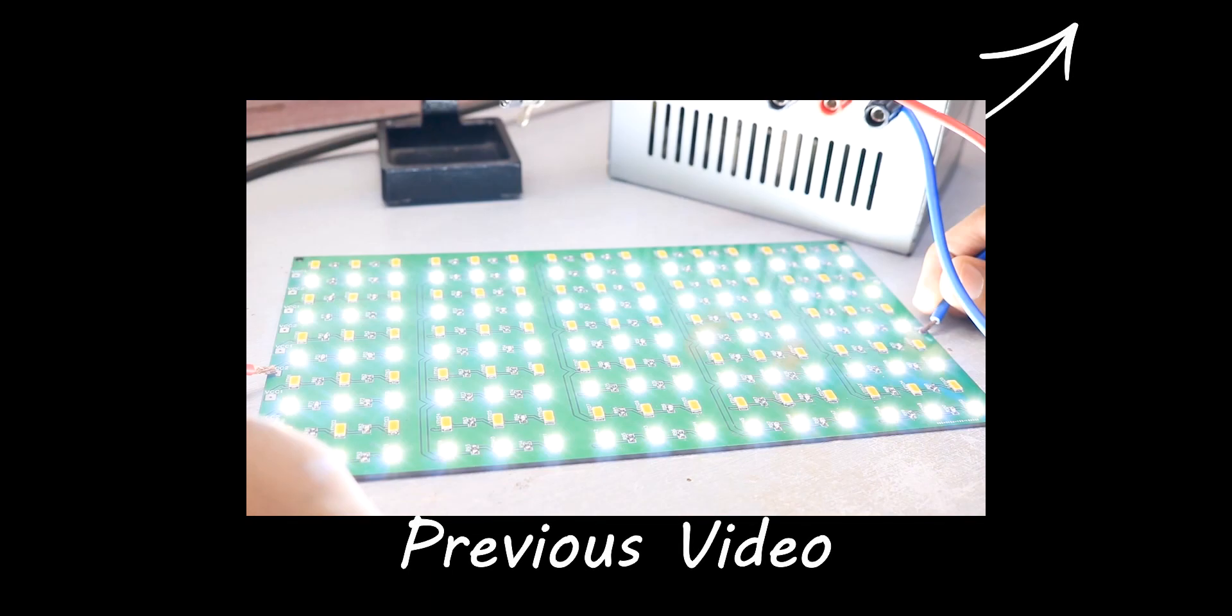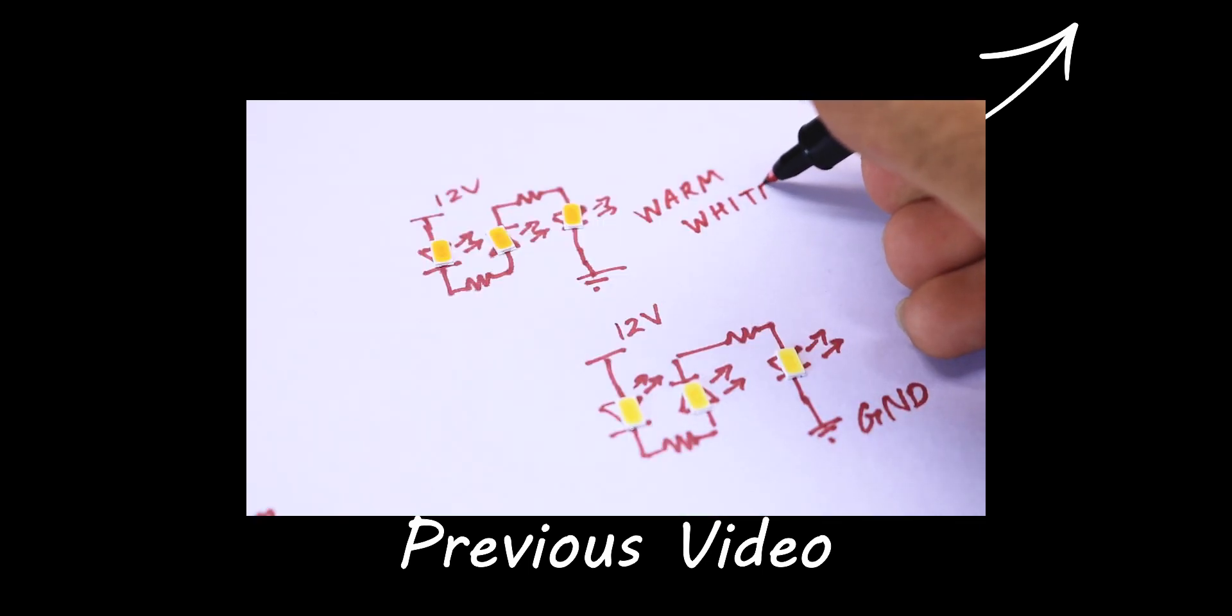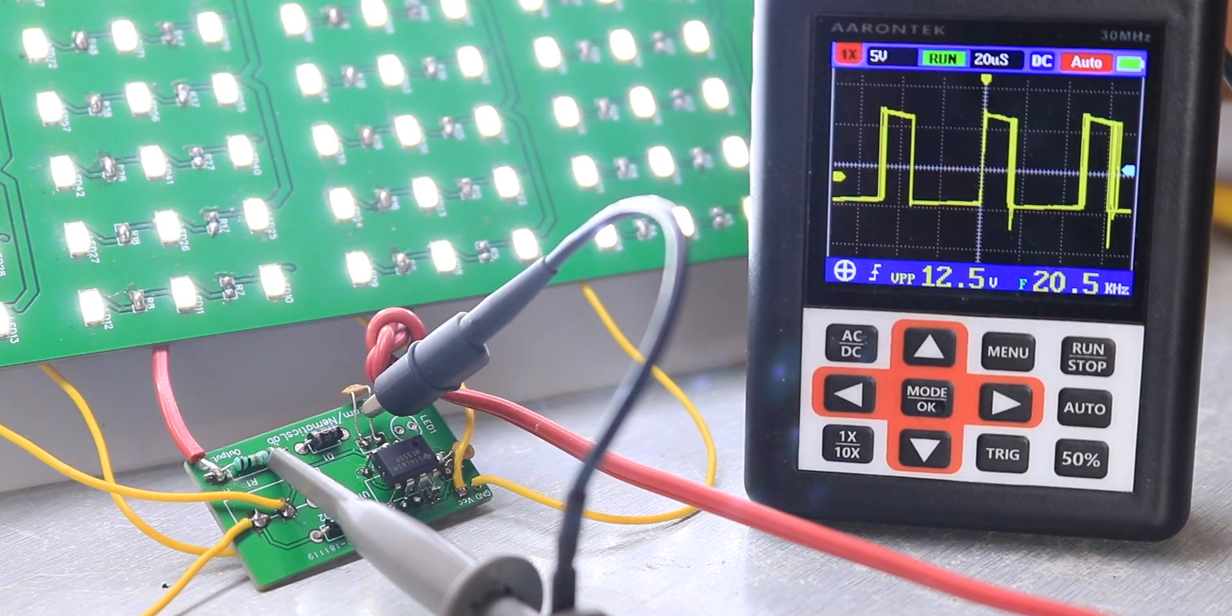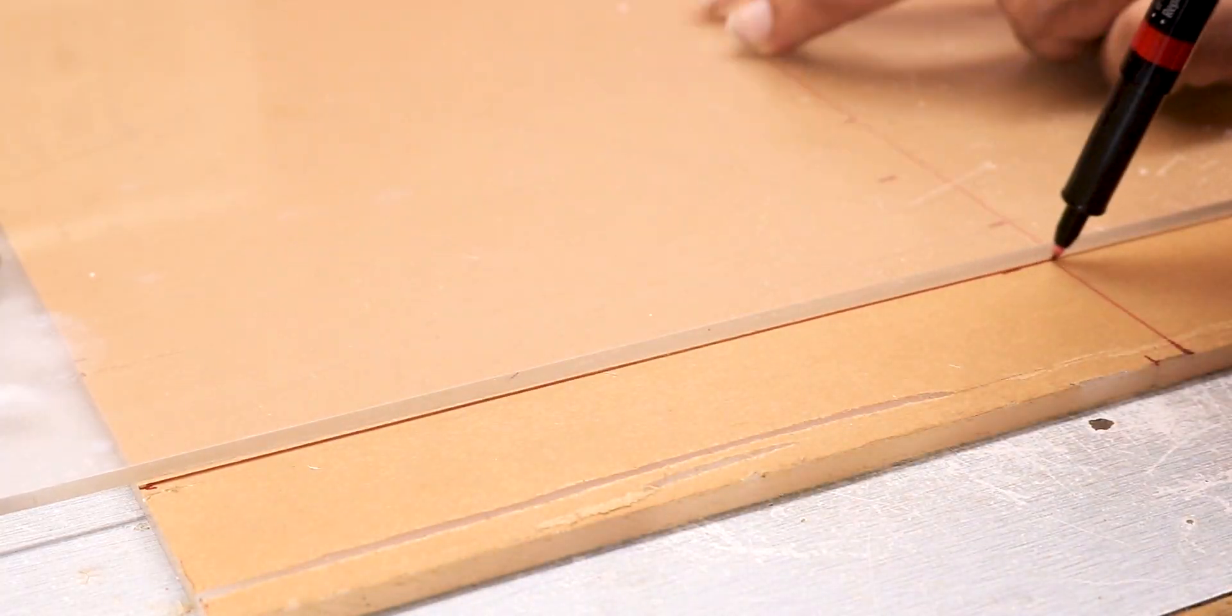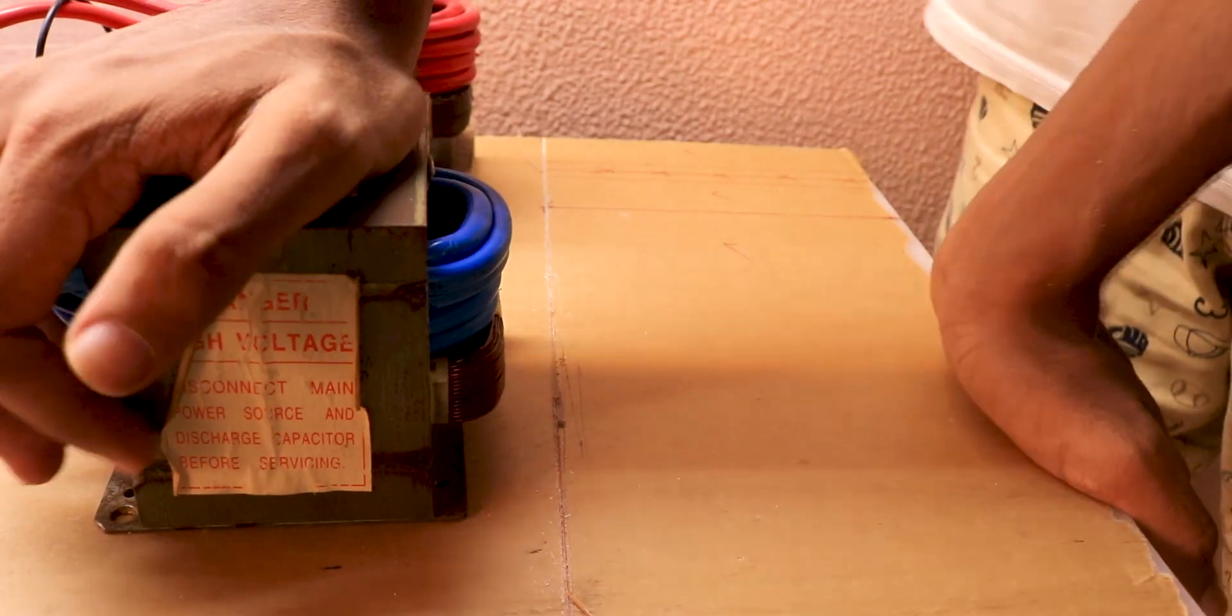Previously we built a light panel with dozens of LEDs of two different types with warm white and cool white LEDs. If you haven't watched that video, I highly recommend watching that video first. In this video we will finish this project by adding dimming functionality and building the case for it. So sit back and relax and let's finish this project.